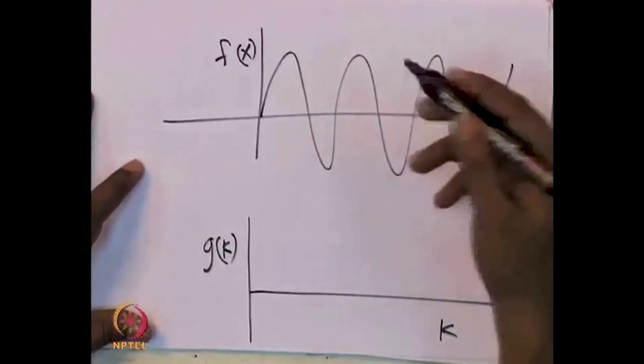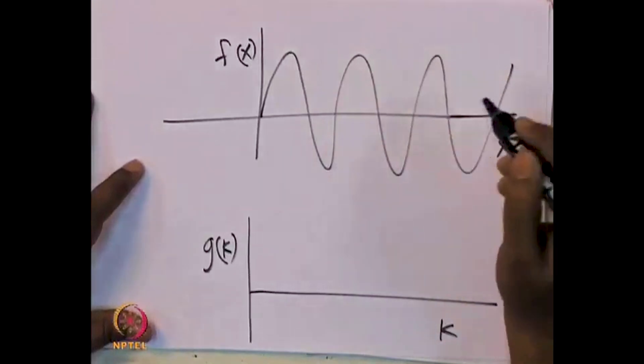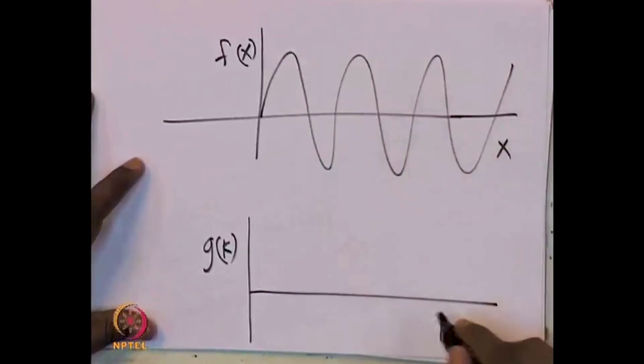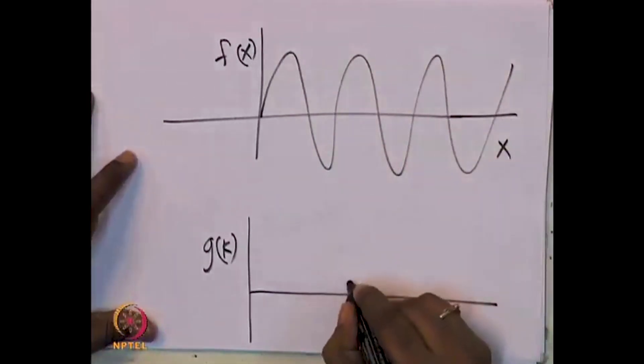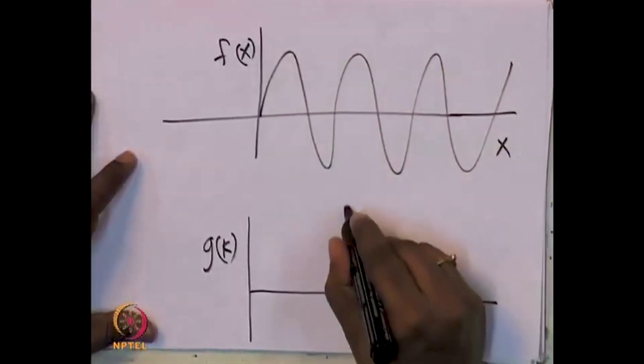So the Fourier transform of a wave e^(i3x) is just one line — a delta function peak — in frequency space.